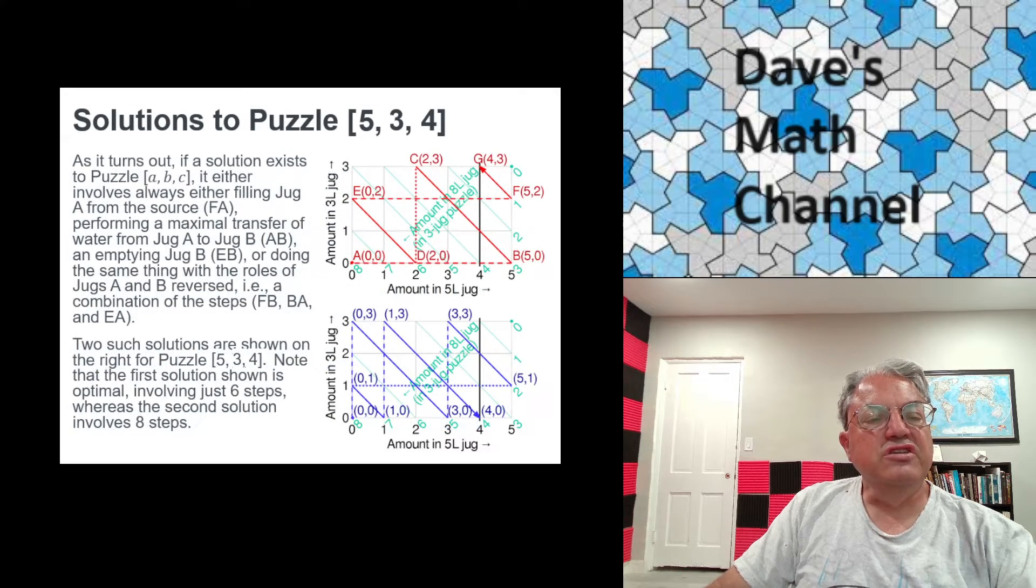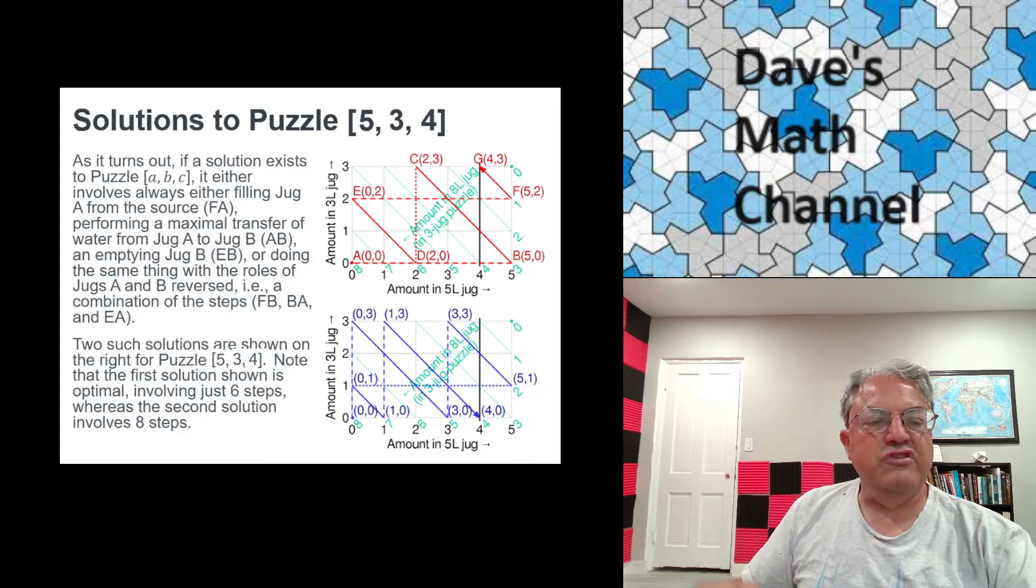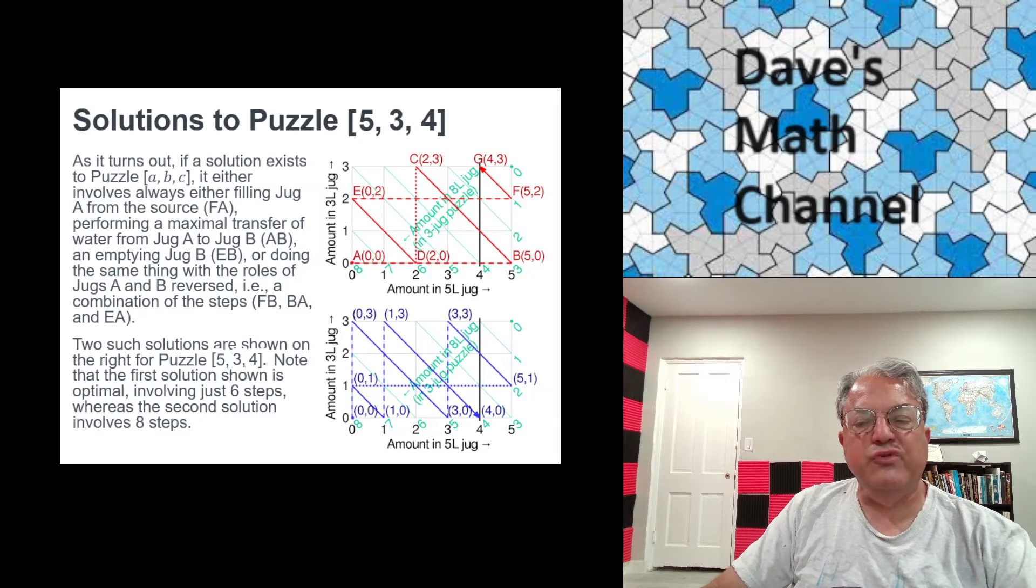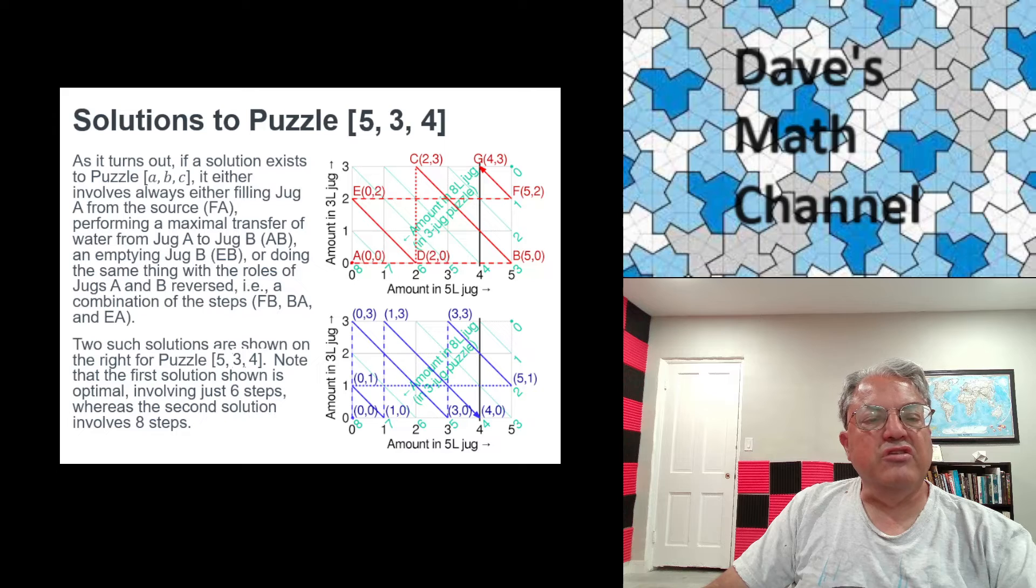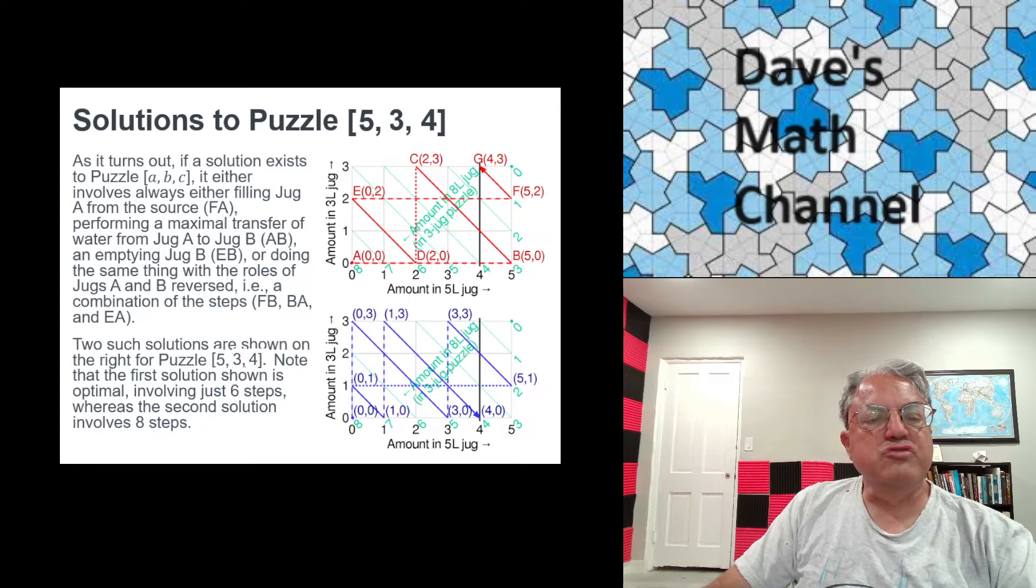So I think that fully generalizes the problem we're trying to solve. Well, let's solve the particular case we're given that was given in the movie Die Hard with a Vengeance. That's puzzle [5,3,4]. So anyway, how do we solve it? Well, there's two graphical solutions shown on the right. And these are both directed graphs.